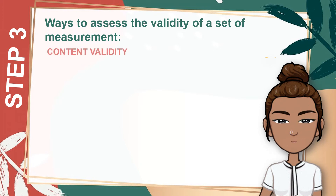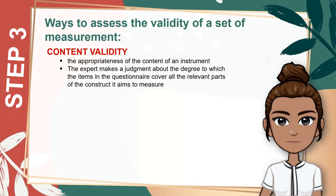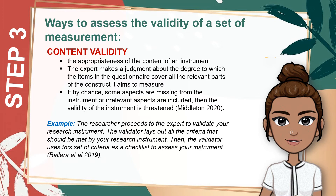The next type of validity is content validity. An expert familiar with the construct being measured is needed. The expert makes a judgment about the degree to which the items in the questionnaire cover all relevant parts of the construct. If some aspects are missing or irrelevant aspects are included, the validity of the instrument is threatened, according to Middleton in 2020. For instance, you as the researcher bring your instrument to the expert, who lays out criteria and uses them as a checklist to assess your instrument, according to Valeria et al. 2019.